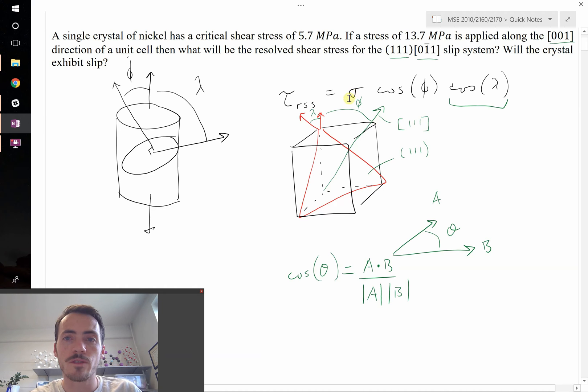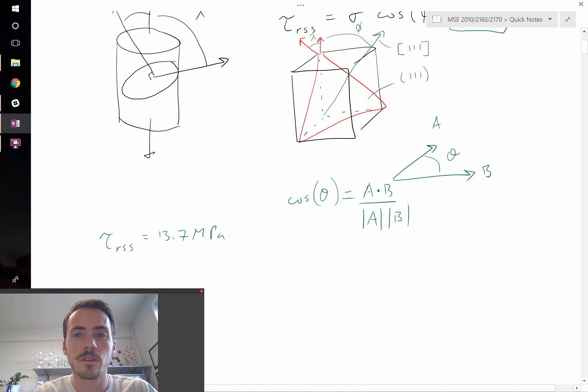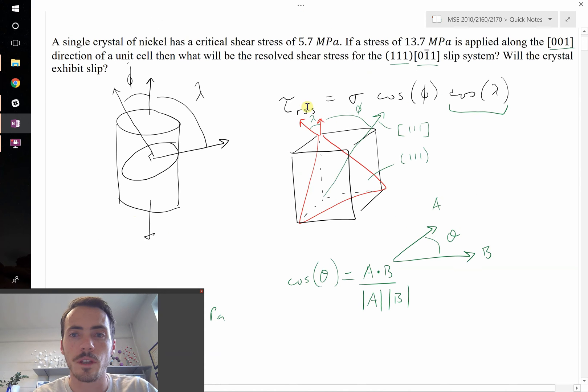We know what the applied stress is, it's 13.7. So tau resolved shear stress is going to be equal to 13.7 megapascals multiplied by the cosine of the angle between our loading direction and the slip direction.